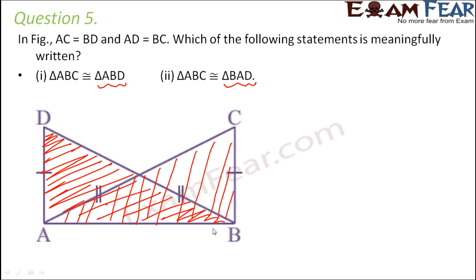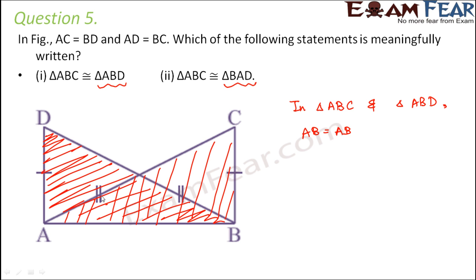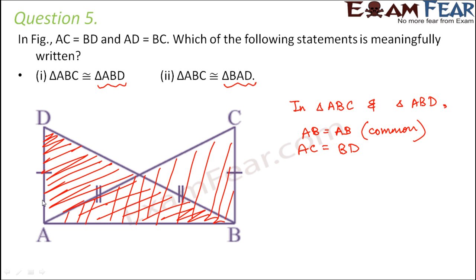So here, when you look at the diagram and compare the two triangles — say triangle ABC and triangle ABD — you see that AB is a common side, so AB is equal to AB. Then you see AC is equal to BD.